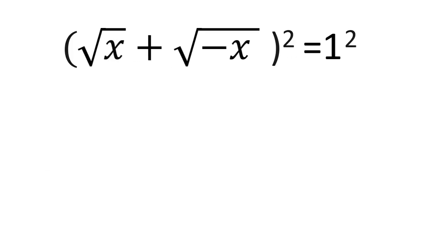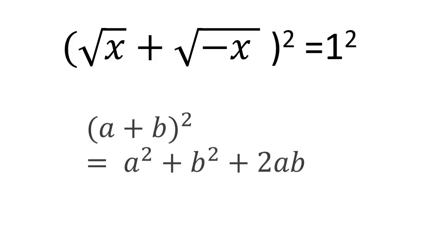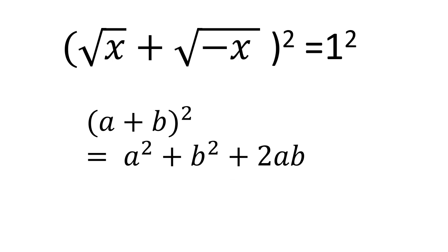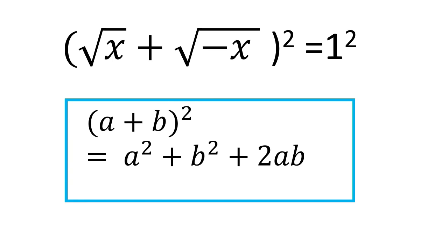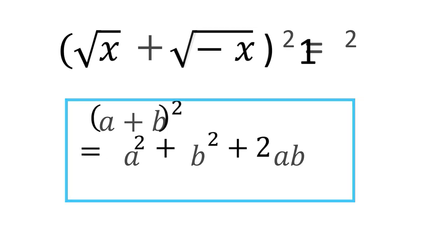On the right side, squaring one is easy. It's just one. But on the left side, we need to expand the square. This means we need to remember the formula: (a + b)² equals a² plus 2ab plus b².